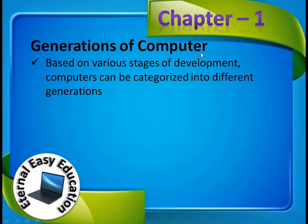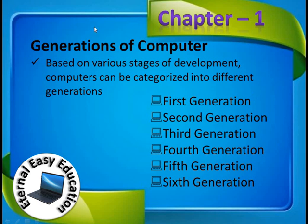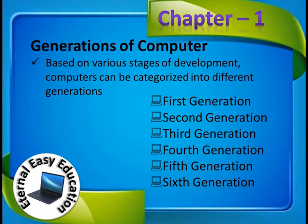Now we are going to learn the generations of computers. Based on various stages of development, computers can be categorized into different generations: first, second, third, fourth, fifth, and sixth. Just like 4G and 5G in mobile technology — 3G had slower data transfer, 4G increased speed, and 5G promises one gigabyte per second. Similarly, in computers, based on components used, there is a generation gap.